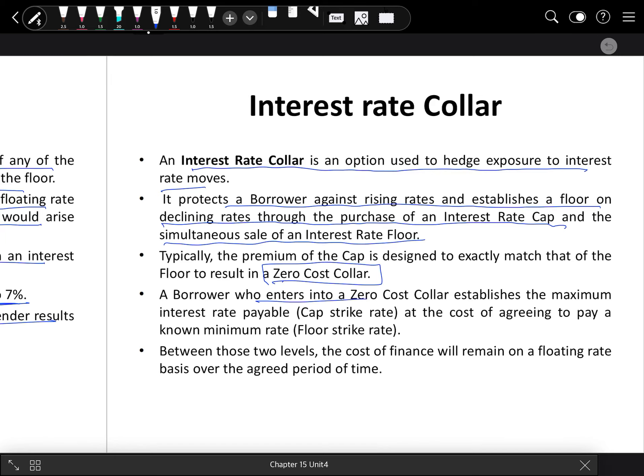Suppose a borrower enters into a zero cost collar and establishes the maximum interest rate payable, a cap strike rate, at the cost of agreeing to pay a known minimum rate, the floor strike rate. Between these two levels, the cost of finance will fluctuate. If the market rate is more than the cap, the bank pays this person. If the floor is less than the market rate, this person pays the bank. Suppose the cap is 10% and the floor strike rate is 8%. If the market rate is 12%, the 2% difference, the bank will pay.